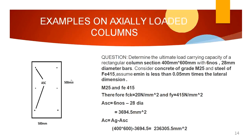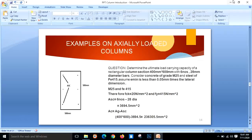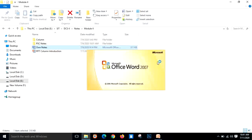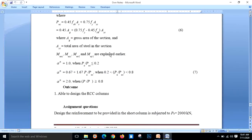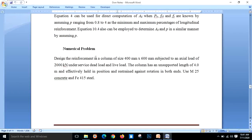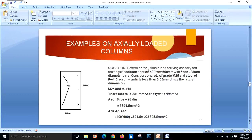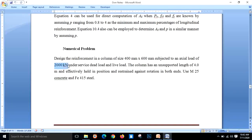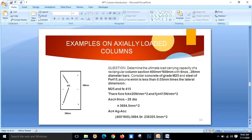We will solve a few problems. In the previous session we solved a design problem where we designed the column reinforcement given the maximum load and size. In this new problem, we need to determine the ultimate load carrying capacity — this is an analysis type of problem. The previous one was a design type of problem where we designed the reinforcement; here we find the load the column can carry.